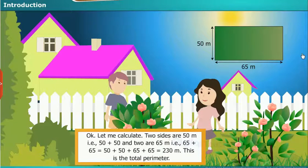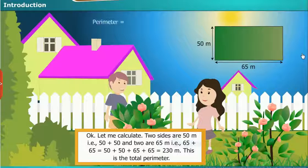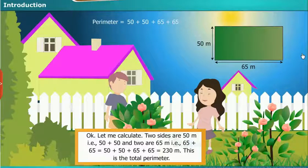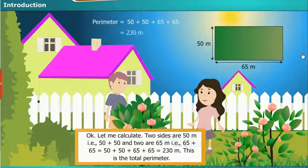Okay, let me calculate. Two sides are 50 meters, that is 50 plus 50, and two are 65 meters, that is 65 plus 65 is equal to 50 plus 50 plus 65 plus 65 is equal to 230 meters is the perimeter.